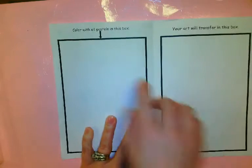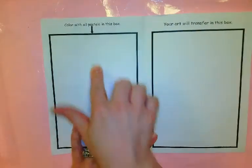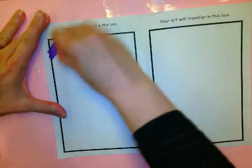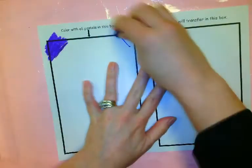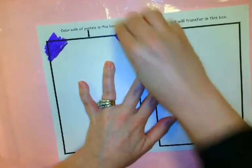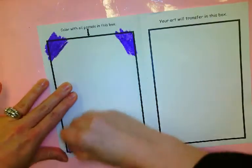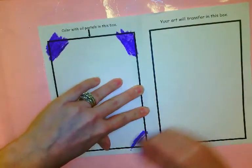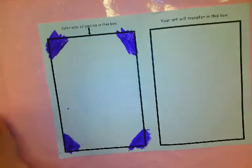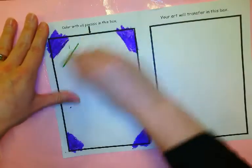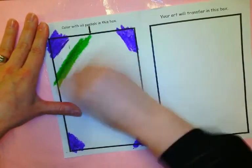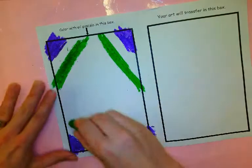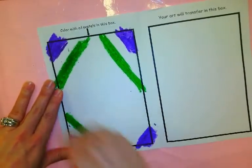Where it says color with oil pastels in this box, that's what you're going to do. Make a pattern however you like, pressing hard with the oil pastels, any colors that you like that are in your container. You can blend and mix, just do not use white. I'm doing some kind of a pattern here and it's okay if you get out of the lines.